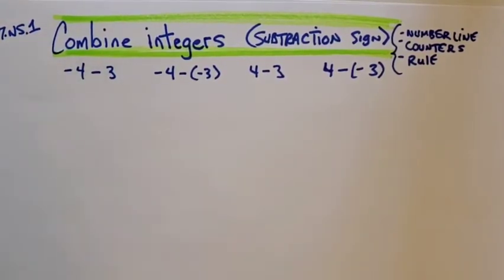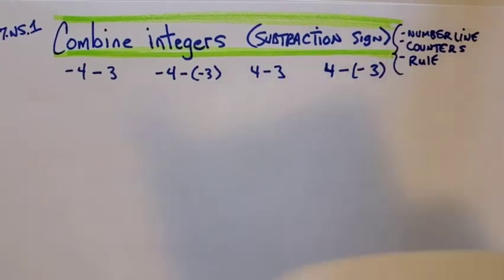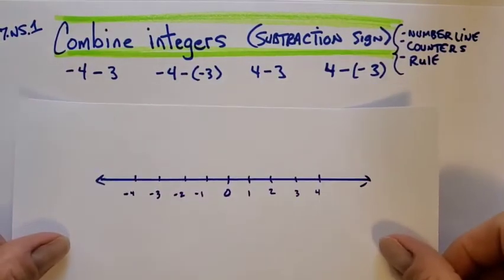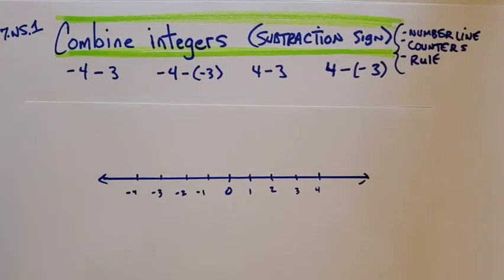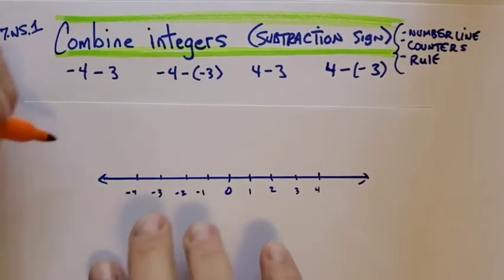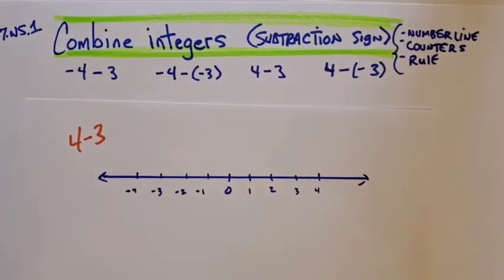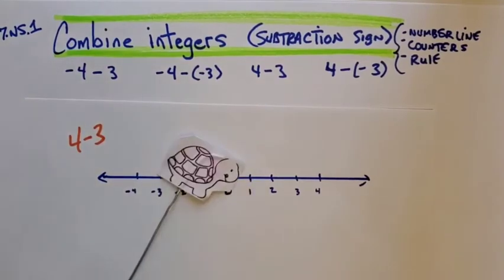Alright, we're going to start with the number line. For this example, I'm going to show you 4 take away 3 — just a quick reminder. You guys know the answer is 1. I'm just building up to how and why we get to 1.